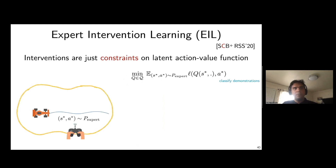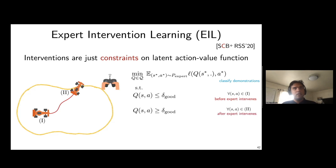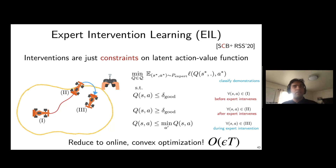The human has a latent value function Q capturing the cumulative cost of taking actions. Every intervention gives a glimpse of this latent action value — even non-interventions tell us something. Our approach, Expert Intervention Learning (EEL), exploits this by modeling interventions as constraints on Q. When not intervening, Q values are below a threshold δ; when the human takes over, Q values are above it; during the intervention, actions are locally optimal. This reduces to a streaming online convex optimization we can solve efficiently, achieving O(εT) error.